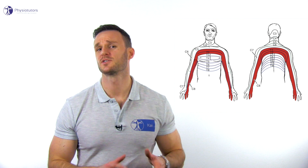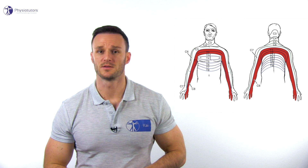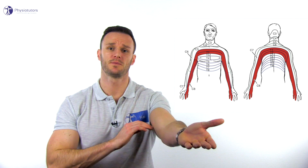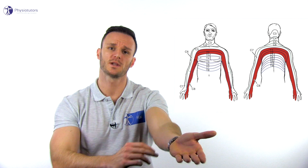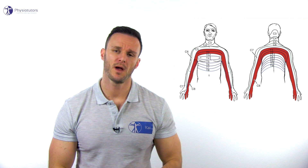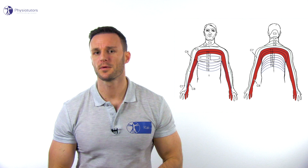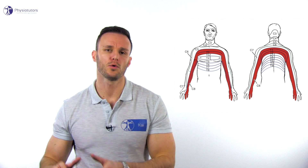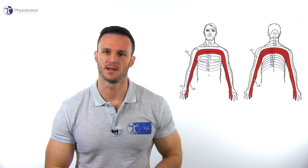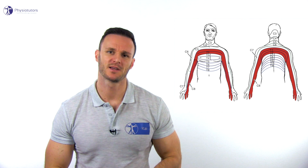In case a patient complains about radiating symptoms along the ulnar side of the arm, mimicking C8 radiculopathy or ulnar nerve entrapment, consider a Pancoast tumor.